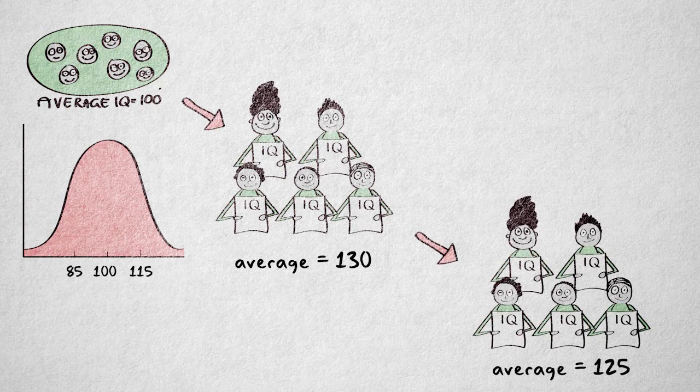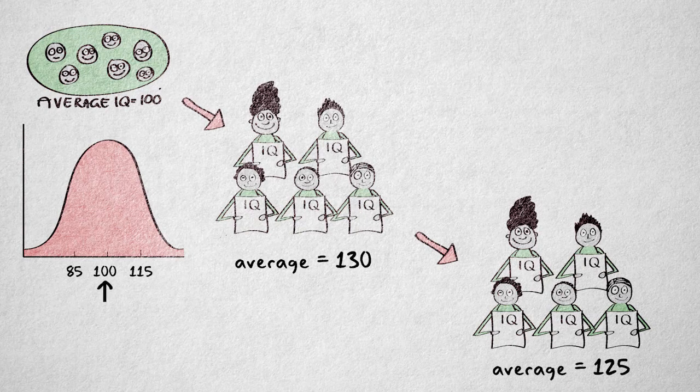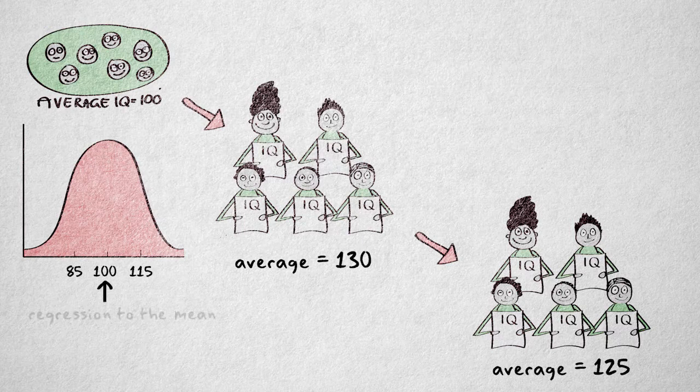Some will get a higher score, but most will get a lower score, closer to the mean. So that's why we call this change in scores regression toward the mean.